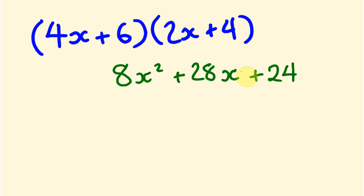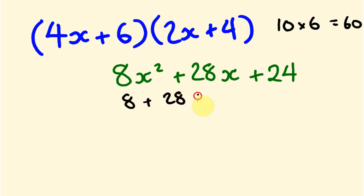Let's check the answer. With x equals 1: 4 plus 6 is 10, and we times that by 2 plus 4 which is 6, so 10 times 6 is 60. And looking at our answer: 8 plus 28 plus 24 also adds up to 60, because 8 plus 28 is 36 plus 24 is 60. So our answer is good.